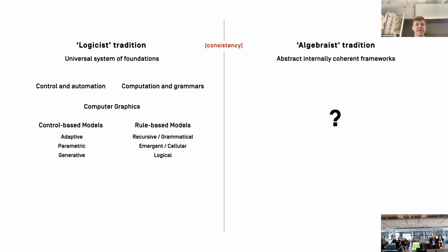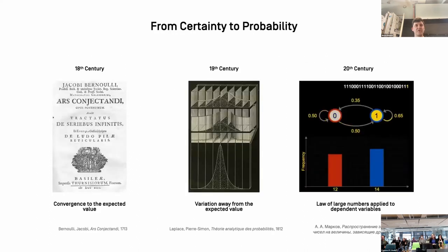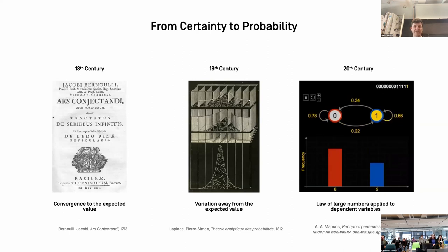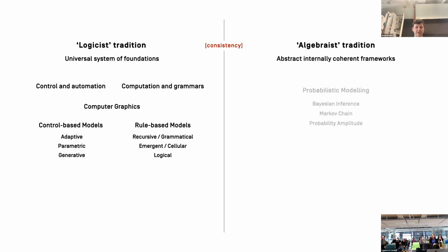What about the algebraic side and its commitment to abstraction? Algebra fully embraced probability theory. In the 18th century Bernoulli introduced expected value; in the 19th century Laplace introduced variation from the expected value — the normal distribution. Then in the 20th century Markov created a theory encapsulating dependent variables. The Markov model was considered completely useless in 1906, but 100 years later Google turned it into the basis of its search engine, completely changing how we think about information.